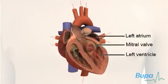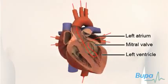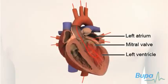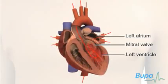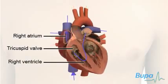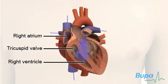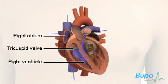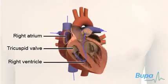The left atrium lies above the left ventricle. The two are separated by a valve called the mitral valve. The right atrium is above the right ventricle. These two chambers are separated by the tricuspid valve.